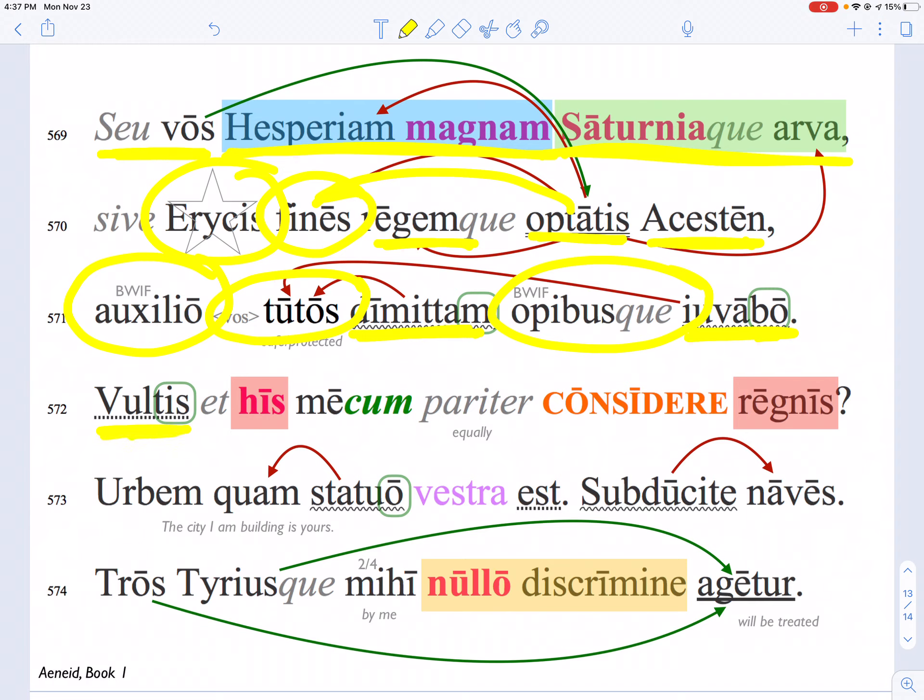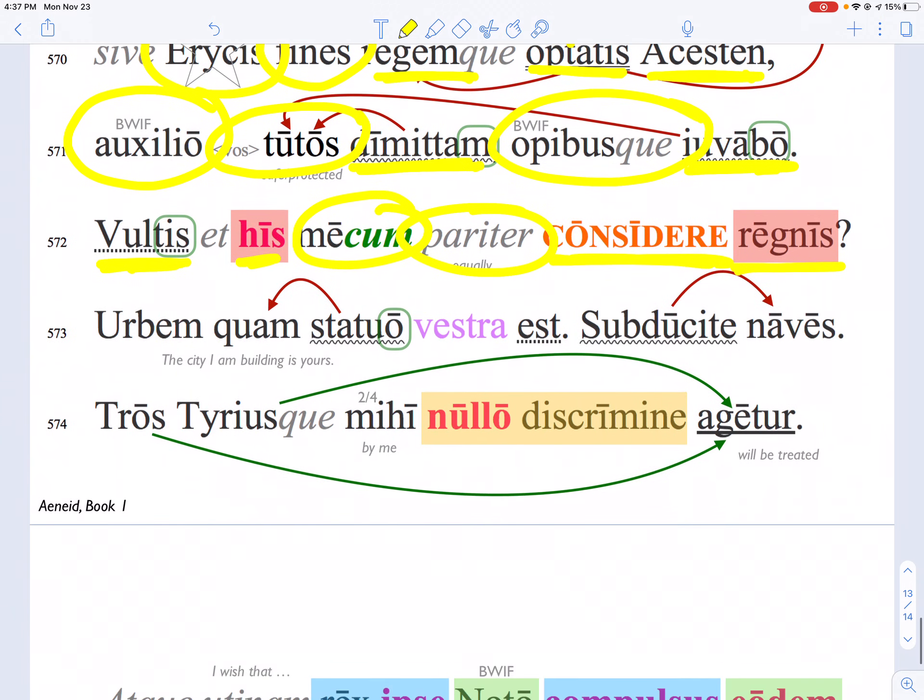Do you want to settle equally here with me in this kingdom? The city which I am building is yours. This urbem should be nominative, but by attraction it becomes accusative by qualm.